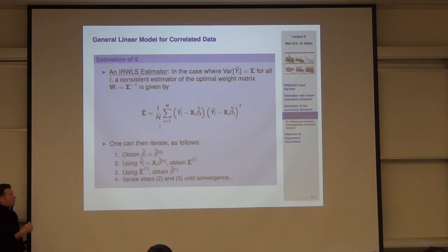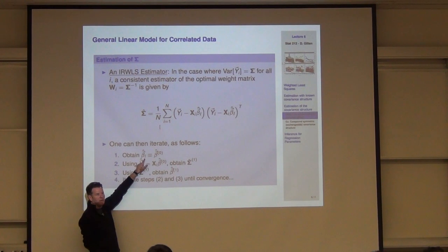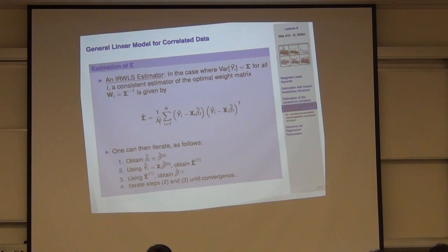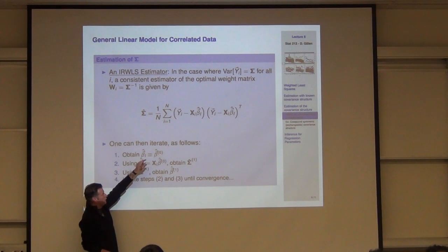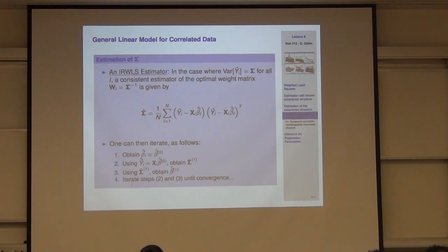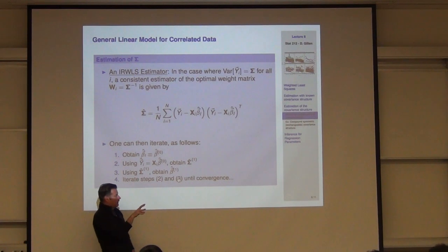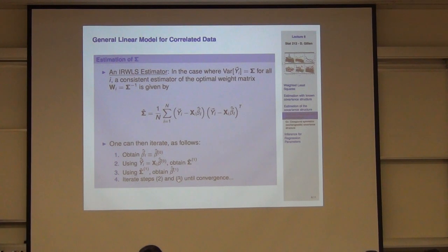How can we build this into an iterative procedure? Start with OLS as a starting point — take the working covariance matrix to be identity (independence assumption). Get your estimates, derive residuals, obtain a first estimate of the weight matrix sigma-inverse, then iterate back to get beta-hat-one and continue until convergence. This converges to the MLE if you have multivariate normal data in a balanced, complete setting with a common sigma. That's the maximum likelihood estimator in that case.